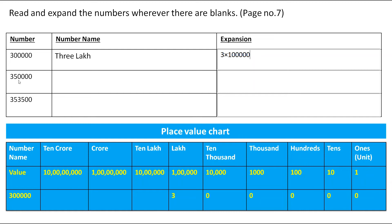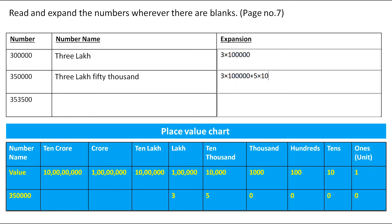The next number is 3,50,000. In the place value chart, 3 is on the lakh place, 5 is on the 10,000 place, and the remaining zeros are on 1,000, 100s, 10s, and 1s. The number name is three lakh fifty thousand. The expansion is 3 × 1,00,000 + 5 × 10,000.